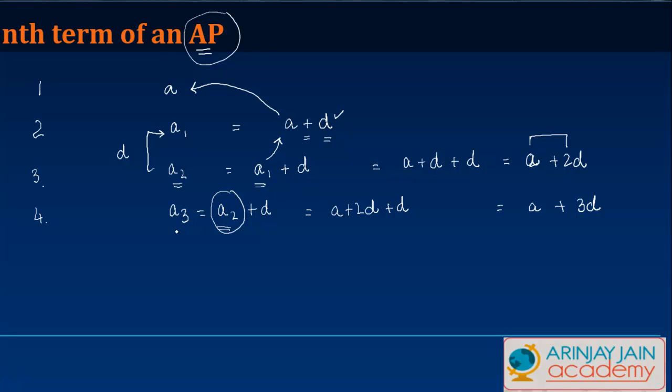Now if you look at it from this perspective, what you will notice is that the number of terms, so if this was the fourth term, this is basically A plus 3 times D. Or in other words, this 3 is 4 minus 1, where 4 is the number of term.